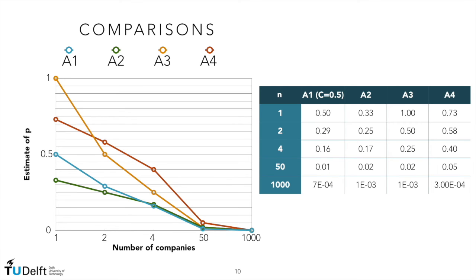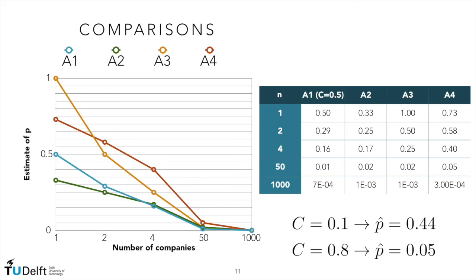What can we say if we compare these estimators? From a qualitative point of view, the four estimators show similar performances. The confidence interval estimator A4 is usually the most conservative. Please note that in the plot, the x-axis scale is not respected. For the simple estimator A1, we assumed the probability of observing zero defaults to be 0.5. Changing this quantity — for example, on the basis of expert judgments — leads to different estimates. For example, for n equal to 4, if we set c equal to 0.1, then p-hat equals 0.44; for c equal to 0.8, p-hat is 0.05.